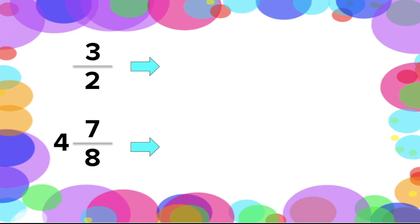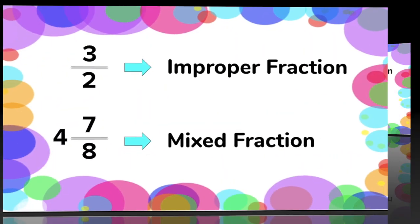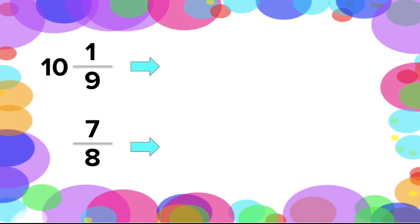Let's move on to our next given: 4 and 7 over 8. As we can see, this fraction is a combination of a whole number and a fraction, so this will fall under a mixed fraction. Our third item is 10 and 1 over 9. Again, this fraction comes with a whole number, so this is also a mixed fraction.